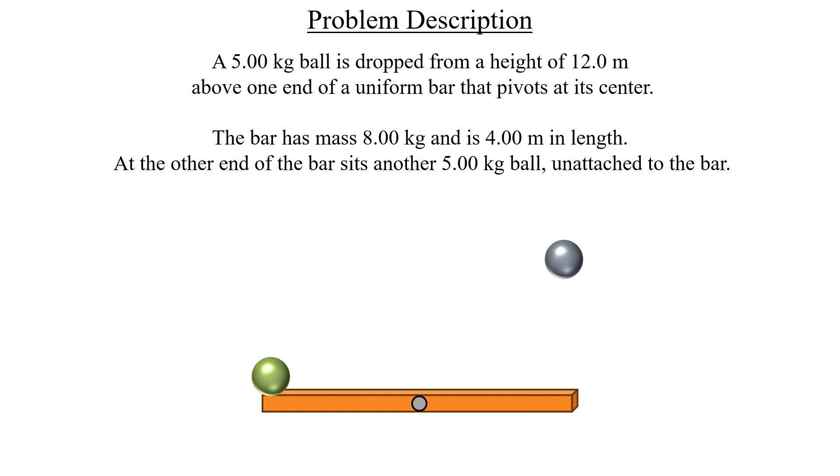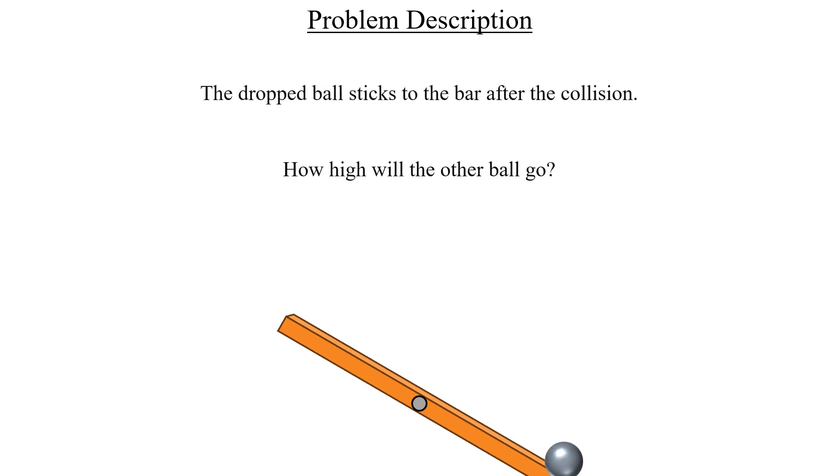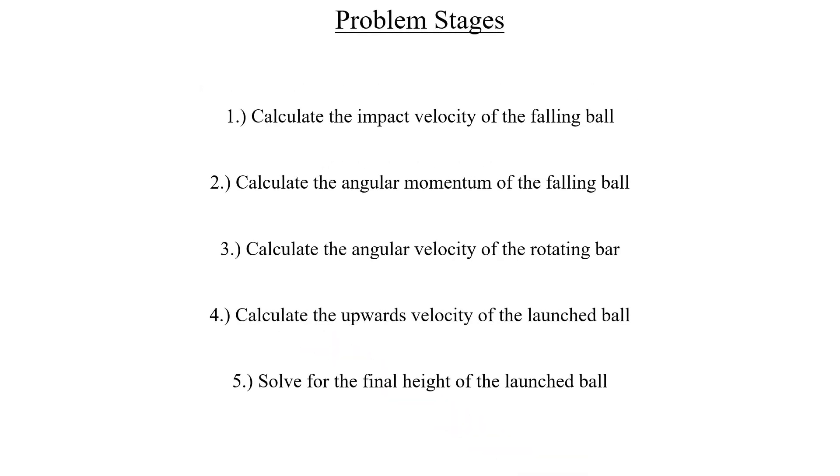Kind of like this. All that we need to do is figure out how high that launched ball goes. To get that height we'll need to go through a process of five different stages. Here's an outline of what those stages are. Unfortunately we can't skip any. Let's get started with the first one.